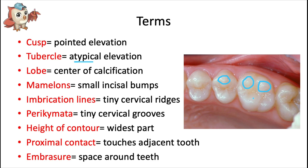Most teeth develop from four lobes, which we'll cover in detail with each specific tooth. Mamelons are small bumps that appear on the incisal edges of teeth when they first erupt, and they usually wear away over time due to normal contact with opposing teeth. If they remain beyond the age of 10, that might be a sign of an anterior open bite where the front teeth just aren't touching.